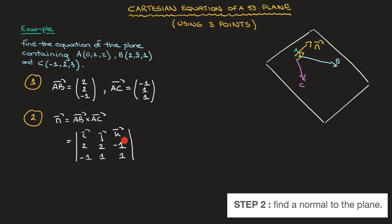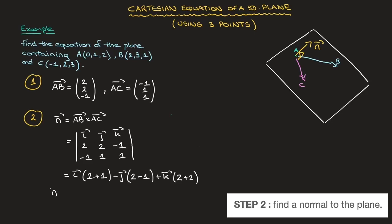Expanding this determinant along its top row I, J, and K: I times (2 times 1 minus 1 times negative 1), which gives 2 plus 1 = 3; minus J times (2 times 1 minus negative 1 times negative 1), which gives 2 minus 1 = 1; plus K times (2 times 1 minus negative 1 times 2), which gives 2 plus 2 = 4. So the normal vector N equals 3I minus J plus 4K.